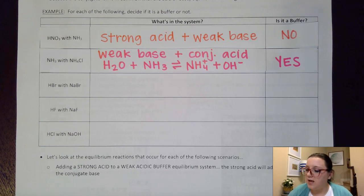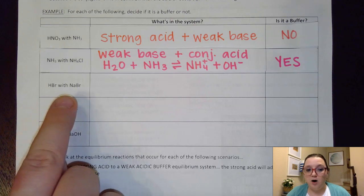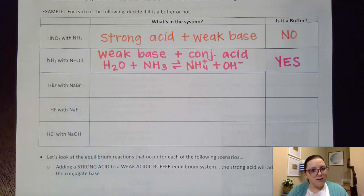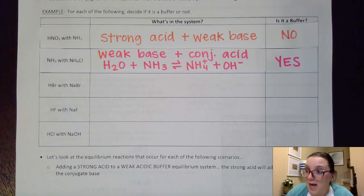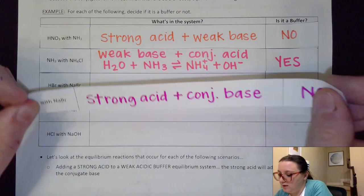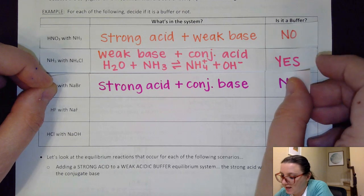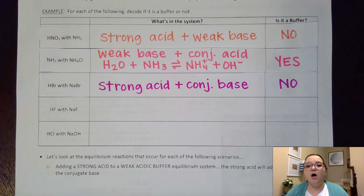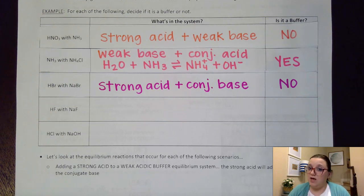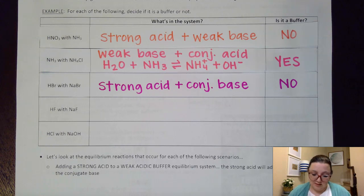The next one: I have HBr with NaBr. They both have bromide in common, which might mean I have that conjugate partner. However, hydrogen bromide is a strong acid, and so even though this is an acid with its conjugate base, that acid being strong means this is not a buffer solution. Again, you can see how important it is that you know your strong acid and base list.